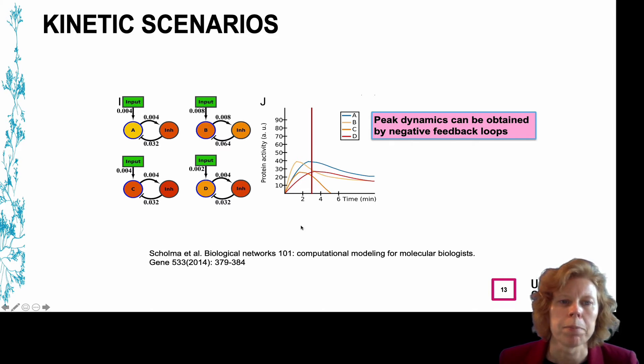Addition of an inhibitor, such as here, will modulate the node's activity. However, to obtain these peak behaviors, you need to generate a negative feedback loop, in which you activate the inhibitor by your node that you want to inhibit. By setting the edge parameters, you can modulate the height and the timing of the peak.